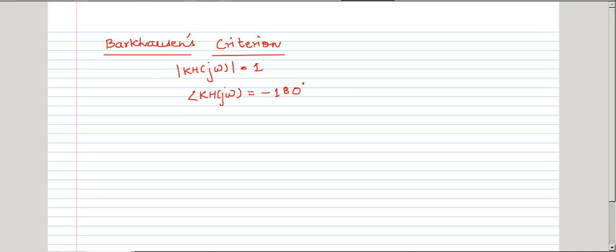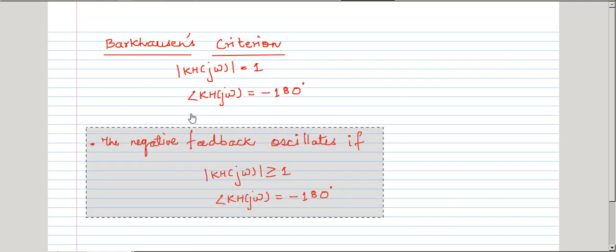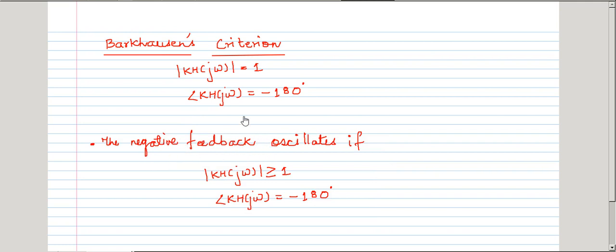Welcome back. In our last lecture, we have seen Barkhausen's criteria for oscillation. It states that if the loop transmission k·H(jω), known as the loop gain, is equal to unity and the phase shift equals minus 180 degrees, then this is known as Barkhausen's criteria for oscillations. This proves extremely useful in the study of stability analysis. The negative feedback oscillates or tends to be unstable if these criteria are met.